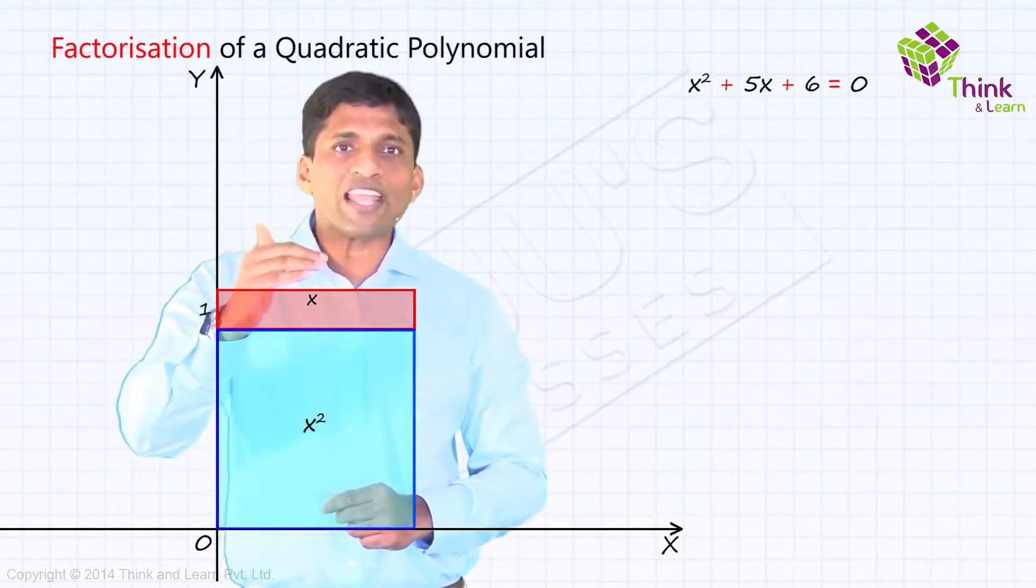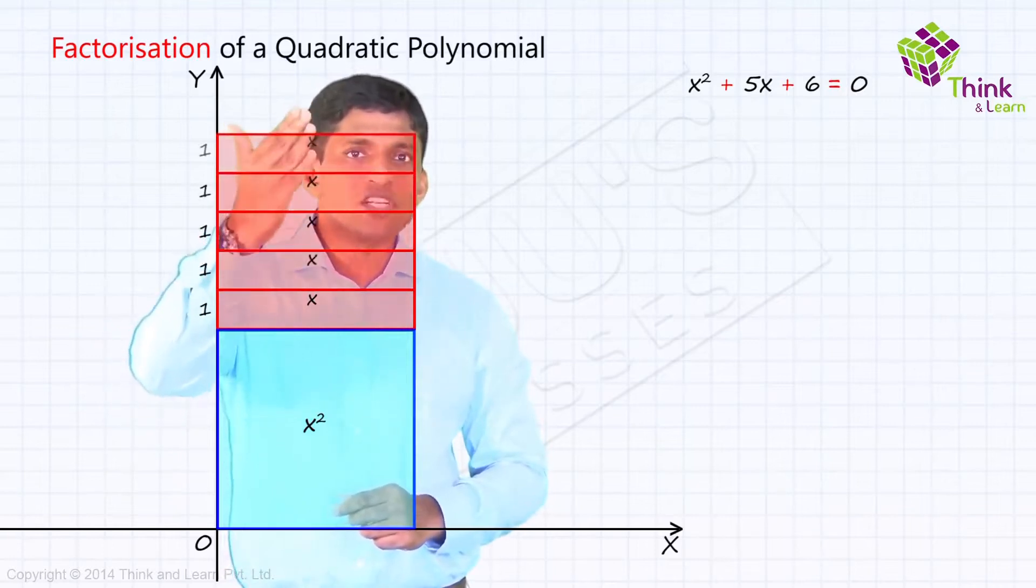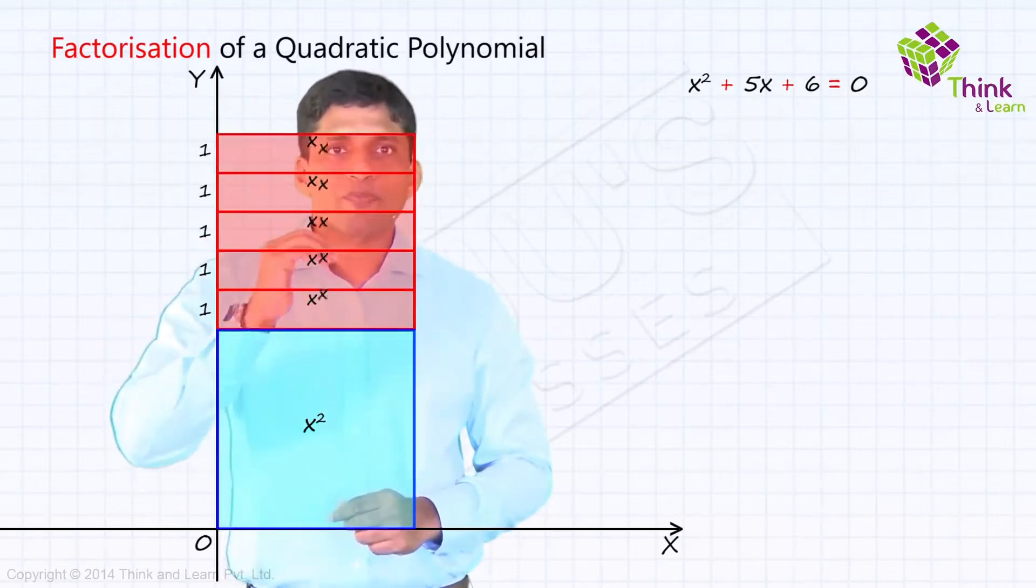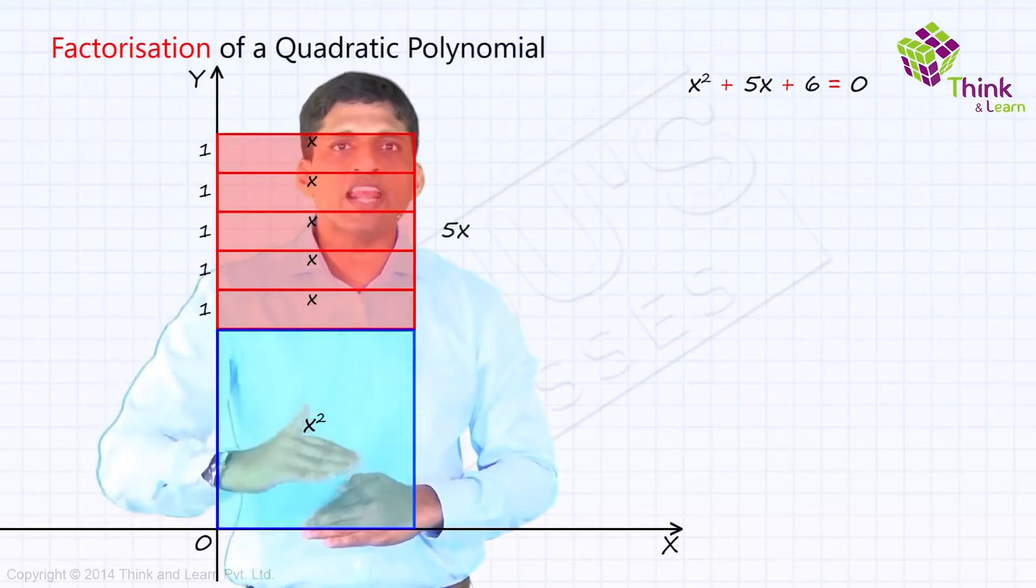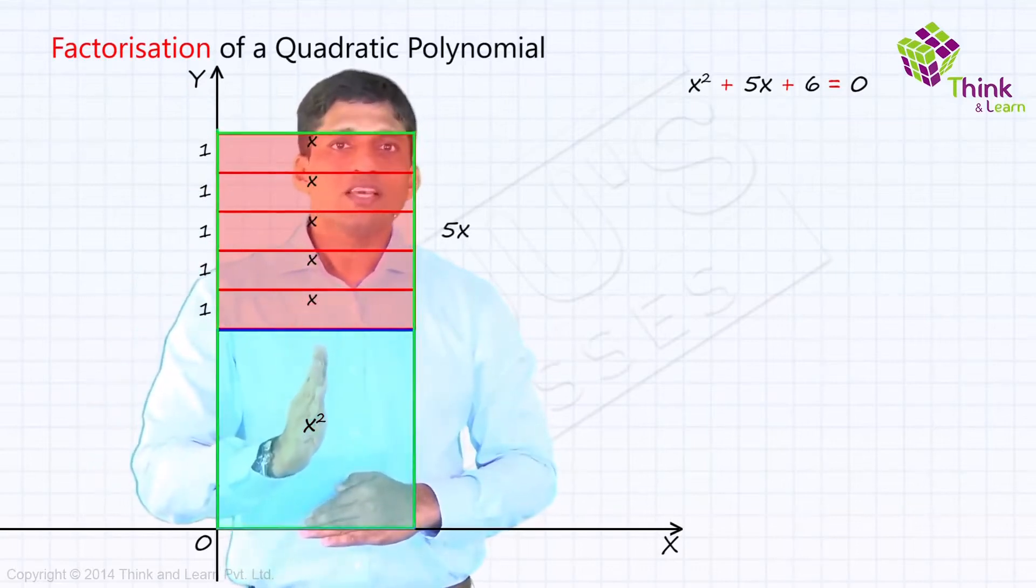Now, if I take this five times, I will get x square plus 5x. So x square plus 5x is the area of this rectangle. 6 is still outside.